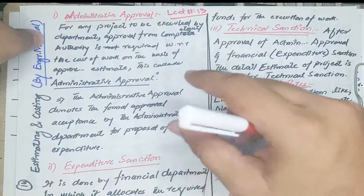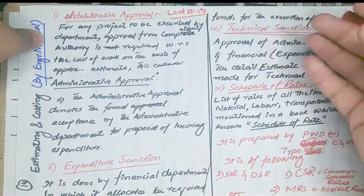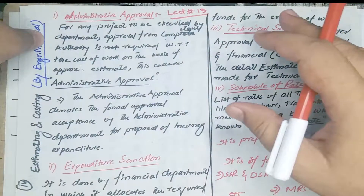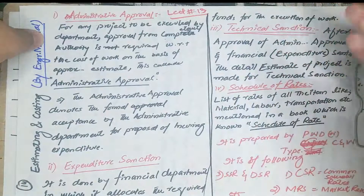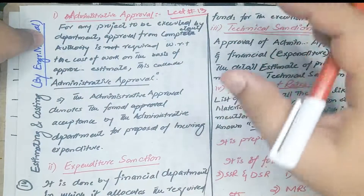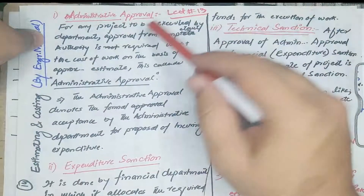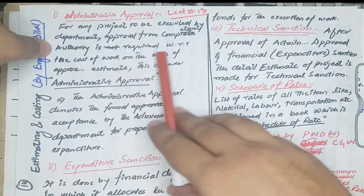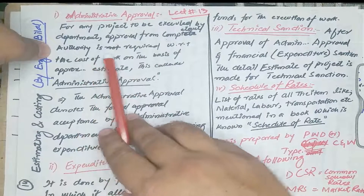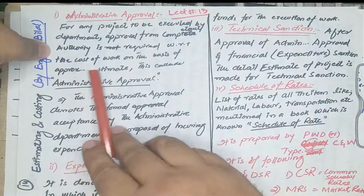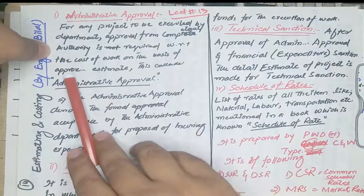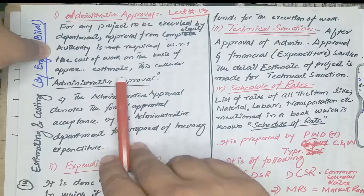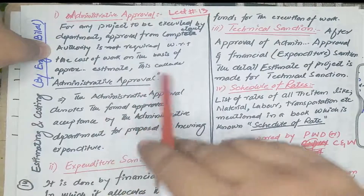Administrative Approval is for projects to be executed by departments like PDWD, CPWD, CNW, Communication Works Department, Irrigation Department, and some other local government departments. We approve the total project by the competent authority with respect to the cost of work, on the basis of an approximate abstract estimate or rough cost estimate. This is called Administrative Approval.